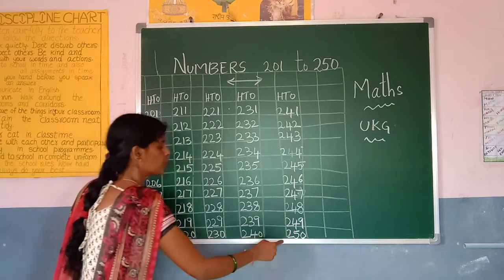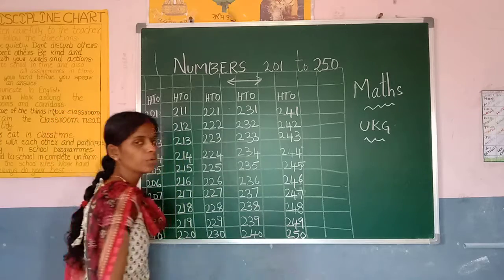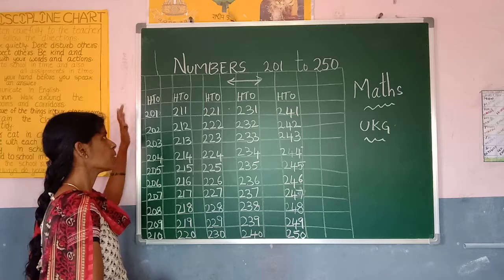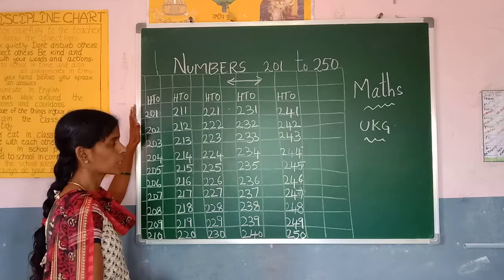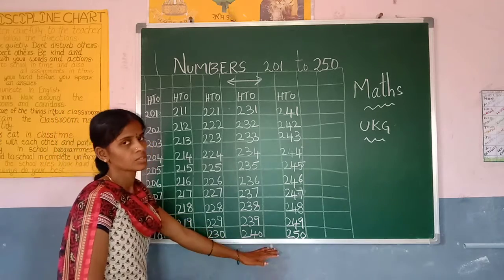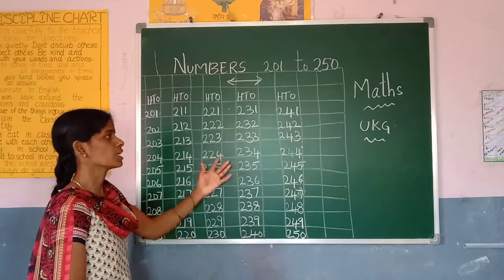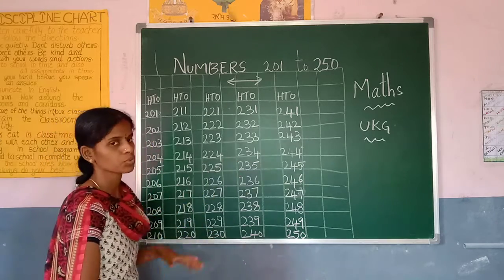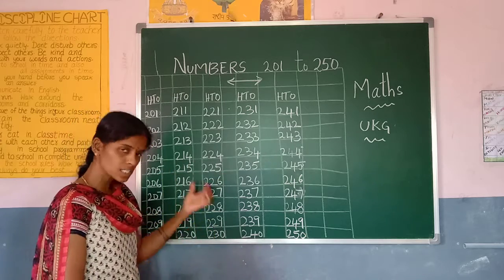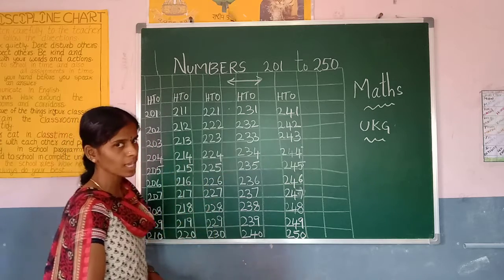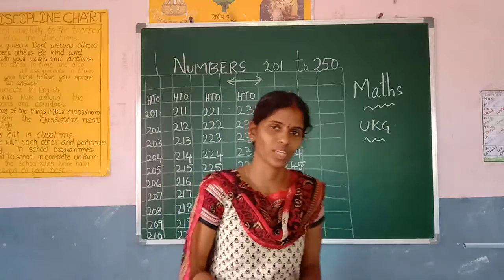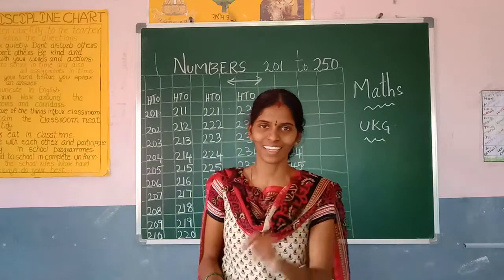Two hundred and one to two hundred and fifty. Okay kids? Numbers: two hundred and one to two hundred and fifty. So you have to write in your CWC book. Neat handwriting. Leave one line. Write the numbers properly and you have to write up to 250. Okay kids? Bye.